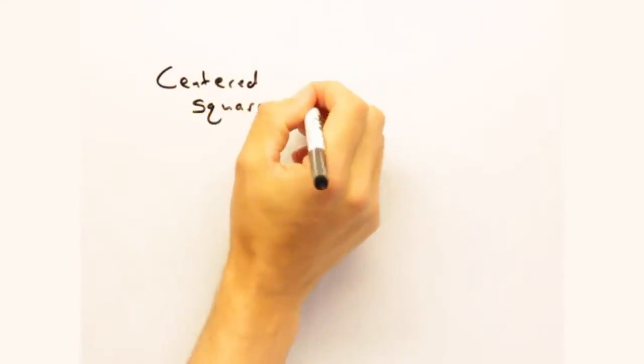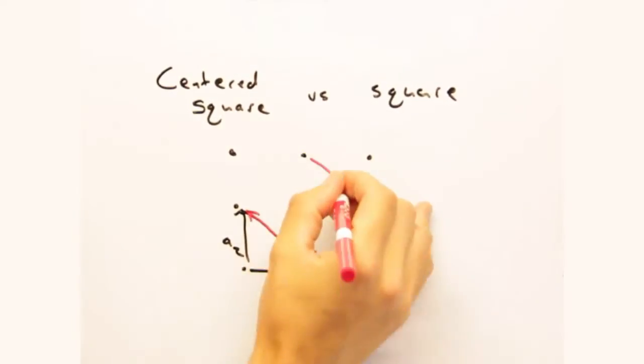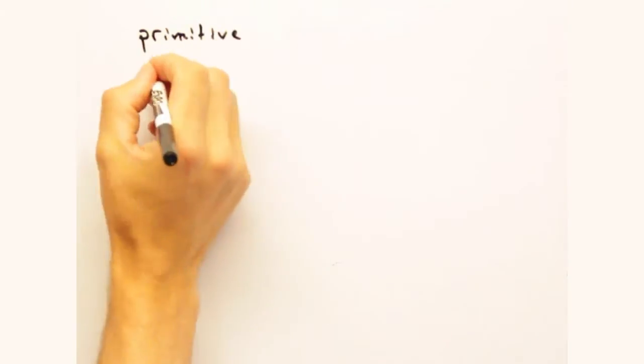Previously we saw that making a centered square cell versus just a square cell didn't reveal anything new. So let's see if that holds true for the reciprocal space.